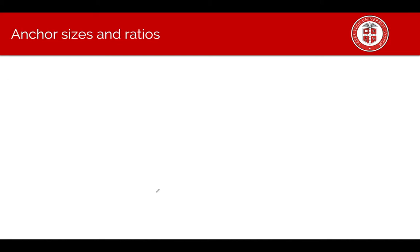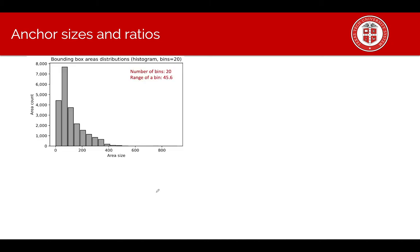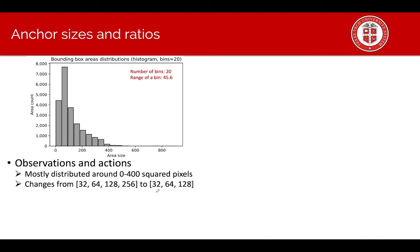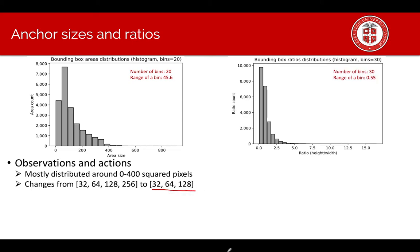We also explore custom anchor size and ratios. First, we explore the bounding box area distributions and see that most of the areas are distributed around 0 to 400 square pixels. Therefore, we change the size to get smaller size. We only stick with 32, 64 and 128. We also explore the bounding box ratio distributions.